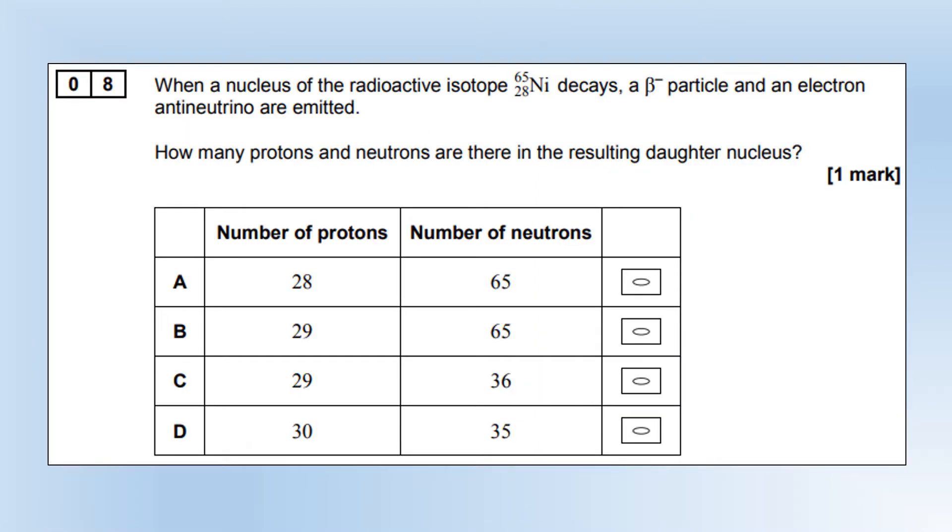When a nucleus of the radioactive isotope 65-28, a beta-minus particle and an electron and an antineutrino are emitted. How many protons and neutrons are there in the resulting daughter nucleus?